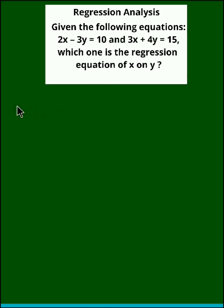Let us assume the first equation to be y on x. Let the y on x equation be 2x minus 3y minus 10 equal to 0.